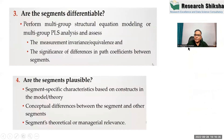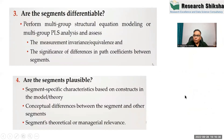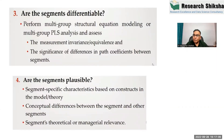Once we identify the segments, we have to examine them in three ways. We have to check whether the segments are different with respect to path coefficients, whether they are different with respect to convergent validity, and whether they are different with respect to discriminant validity. So we check whether the segments are invariant across the structural model and the measurement model, which has convergent validity and discriminant validity. You calculate three types of invariance using segmentation.